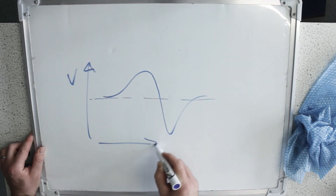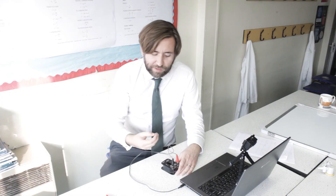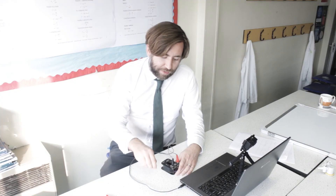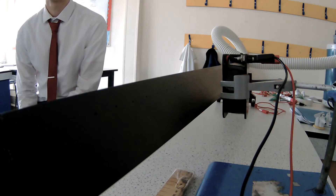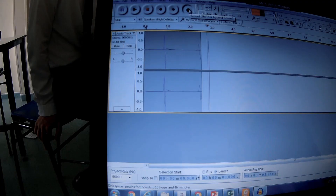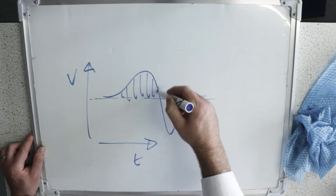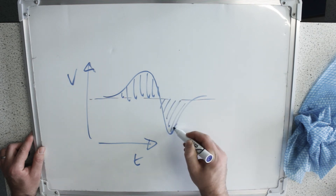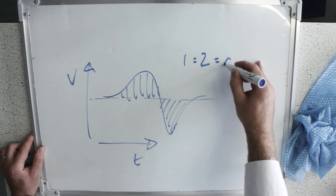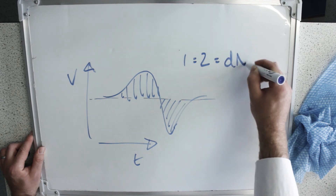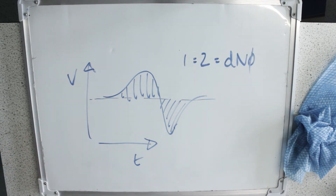The area underneath the curve will be the change in flux linkage, which would be dNΦ. As we move the magnet across, that area applies both as it goes into the magnetic field and as it comes out. This area here would equal this area here, and both of them would equal the change in flux linkage.